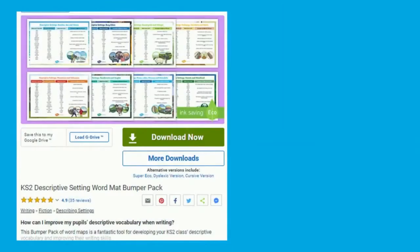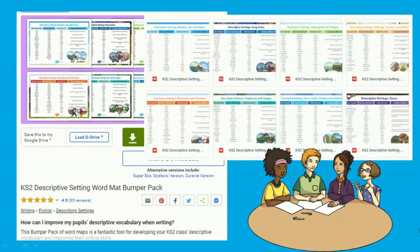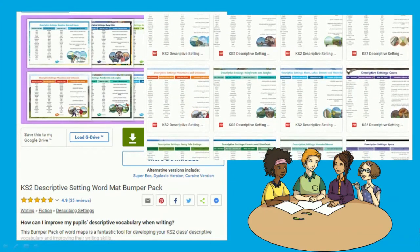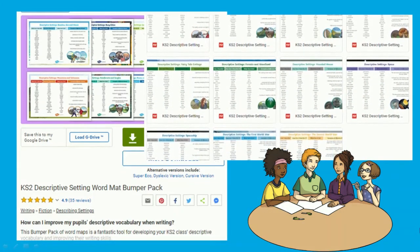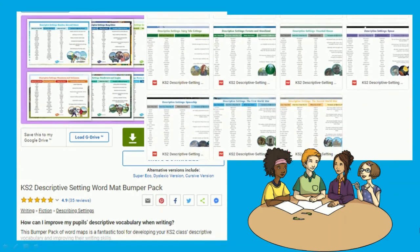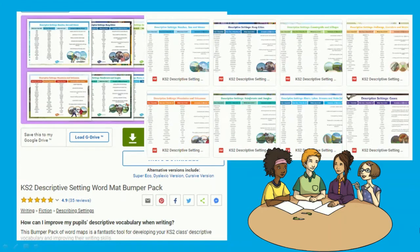If you're a fan of these maps, they're also available to download as a bumper pack. Included is a whole range of descriptive setting word maps for developing your Key Stage 2 class's vocabulary and improving their writing skills. This pack is fantastic as you'll have a wide selection of maps all in one place.